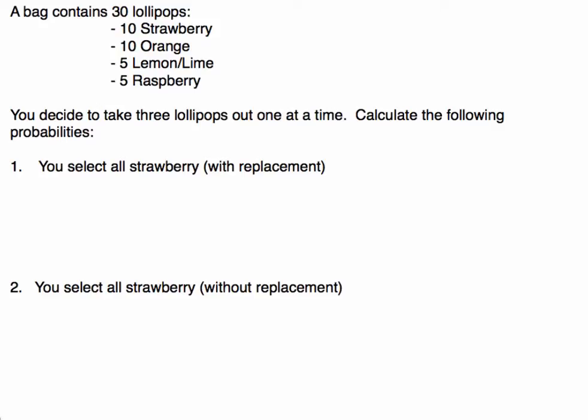In this video I'd like to go over independent and dependent trials and using the multiplication rule. We're told that a bag contains 30 lollipops: 10 strawberry, 10 orange, 5 lemon lime, and 5 raspberries. We decide to take three lollipops out one at a time and we want to calculate the following probabilities.